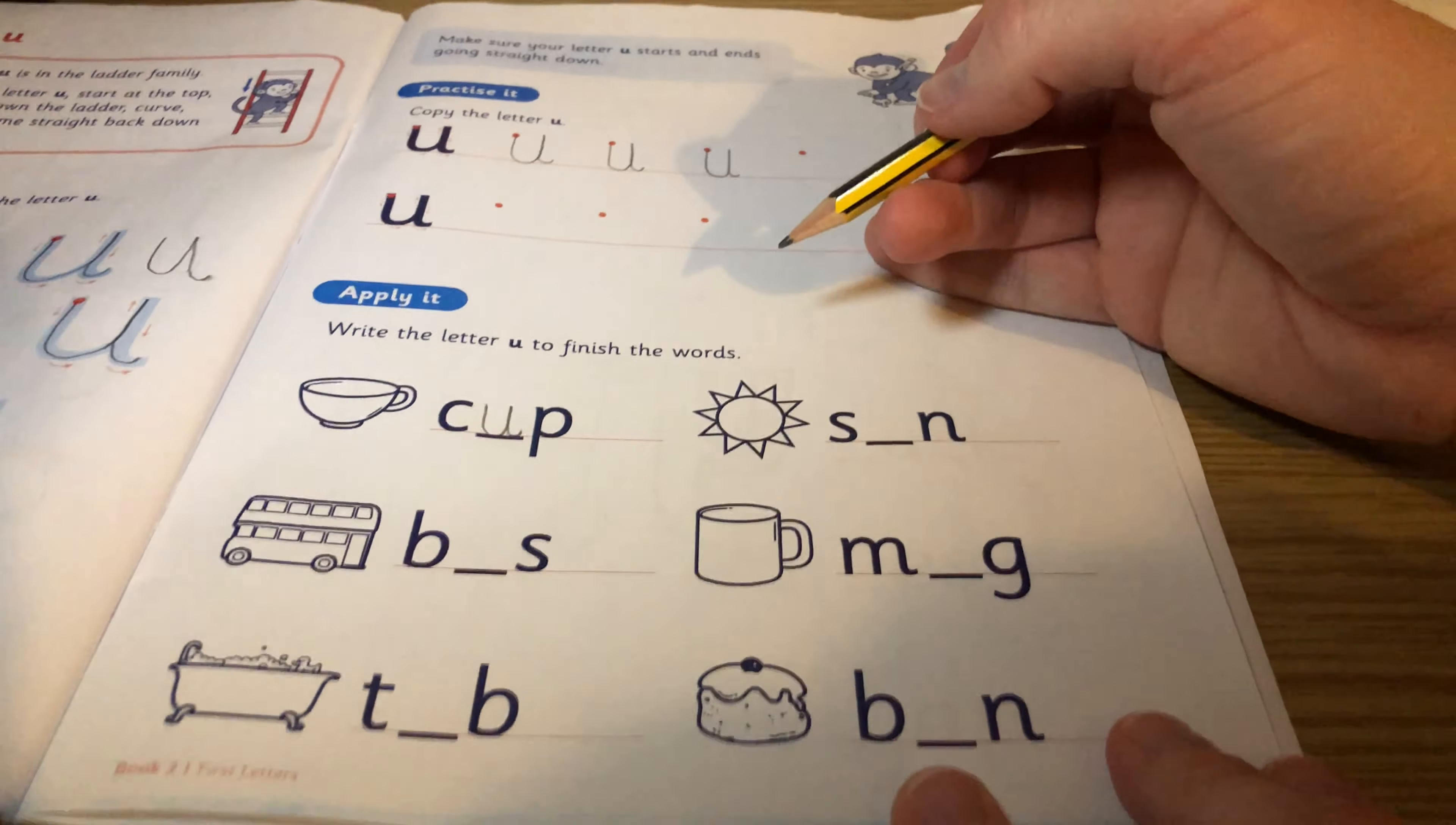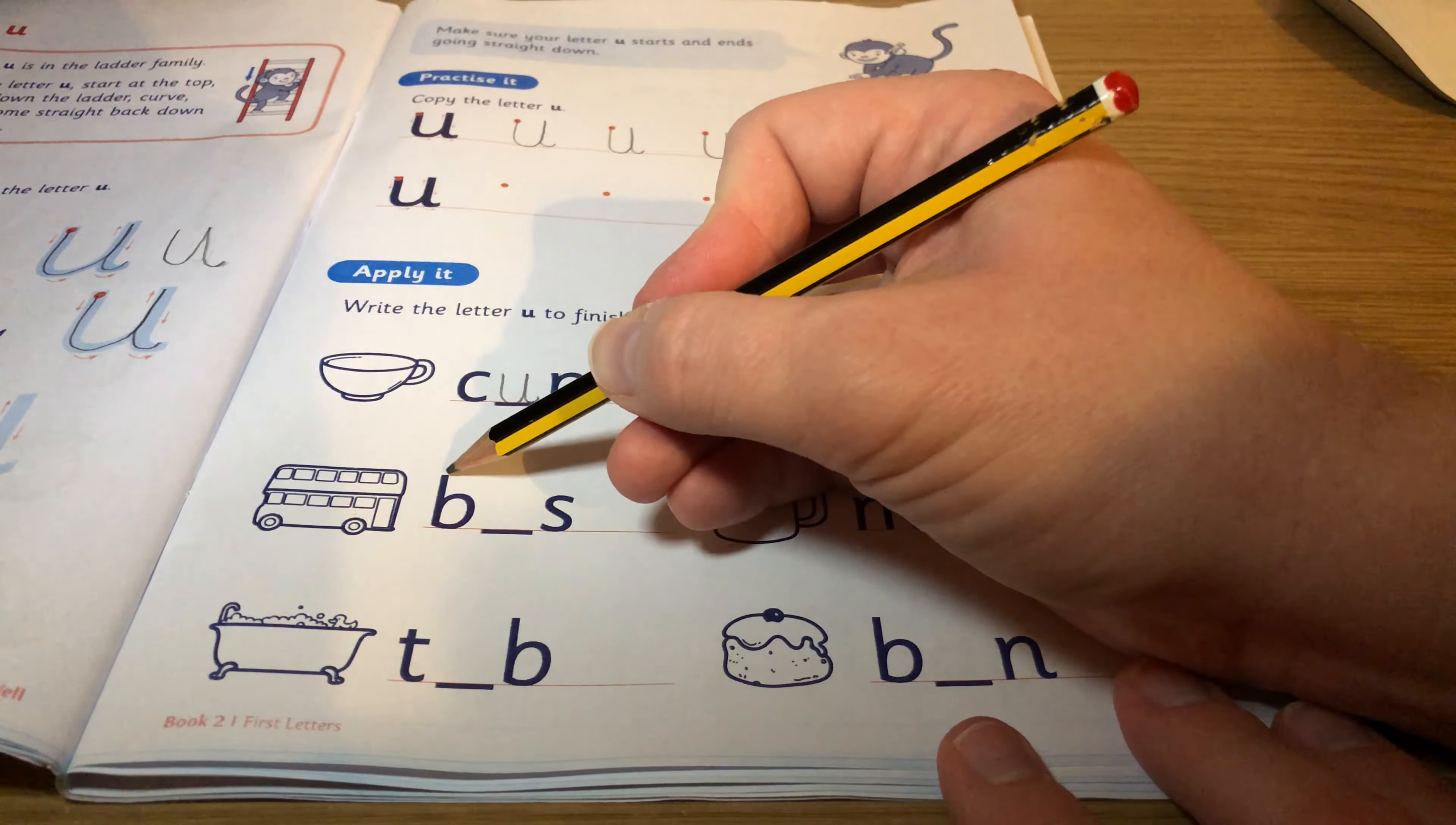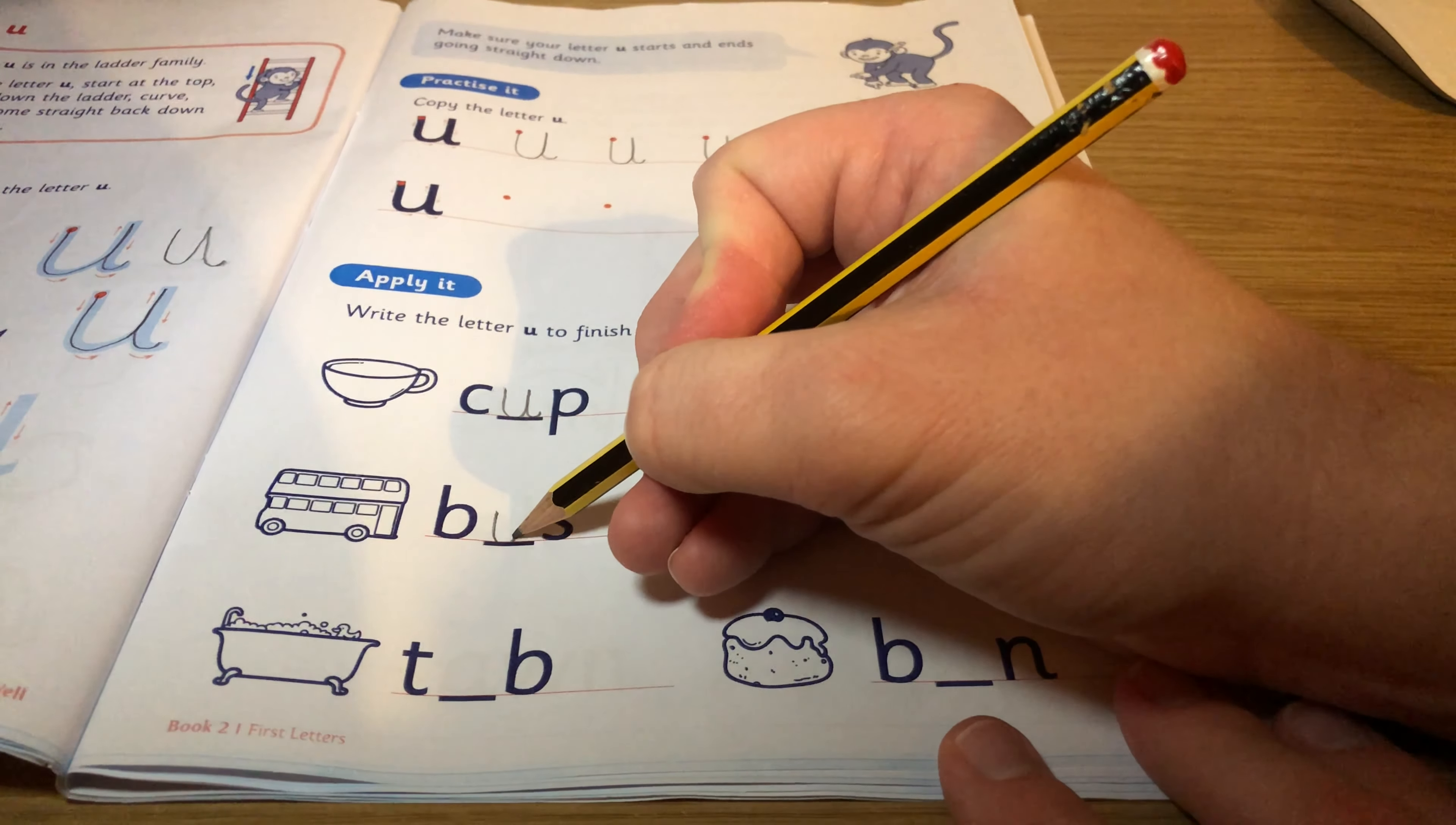See if you can do those for me. Underneath with the bus, with the B here. So we've got an ascender here, so we're not starting that at all. We're going to start at the normal height here. Start at the top, come straight down, curve, go straight back.